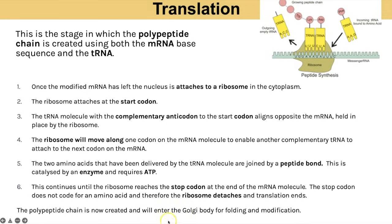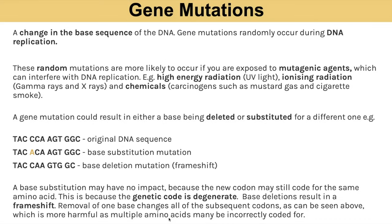The modifications of the polypeptide chain occur in the Golgi body, where folding creates the secondary, tertiary or quaternary structure. We then move on to how variation is introduced.